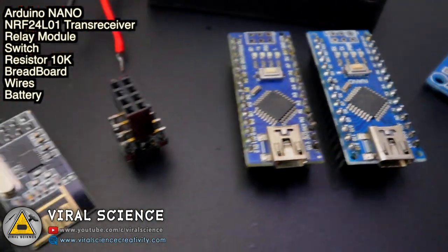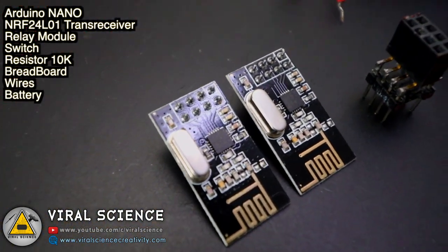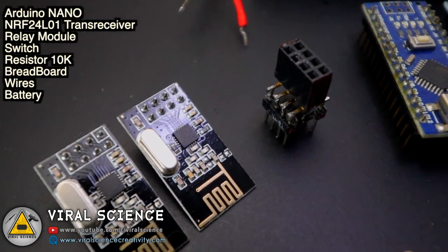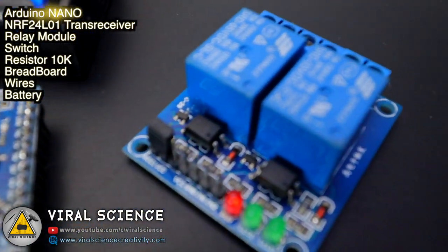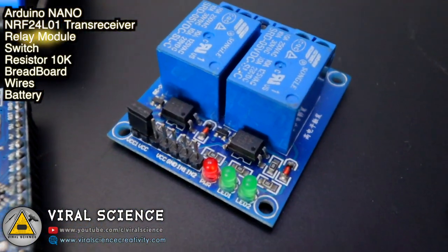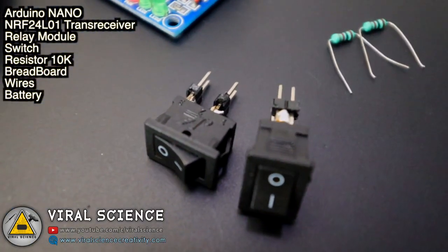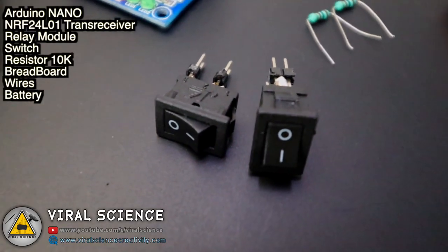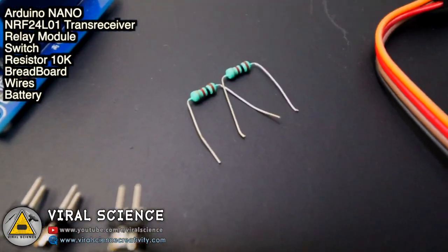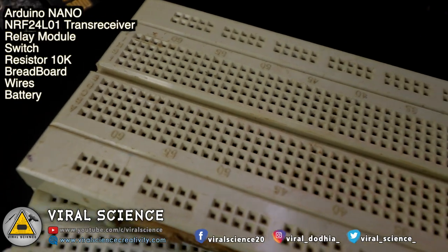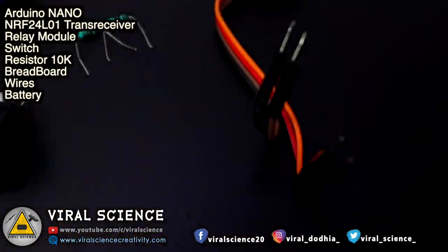To make this project, you'll need two Arduinos (one for transmitter and one for receiver), two NRF24L01 transceiver modules, a relay module, two switches for on and off, 10k resistors, two breadboards, some wires, and a battery. I've made a connector so I can plug the module on a breadboard.